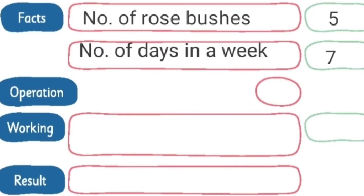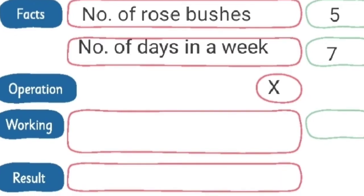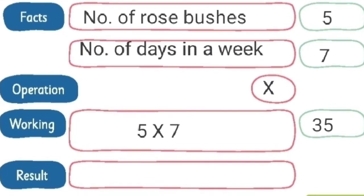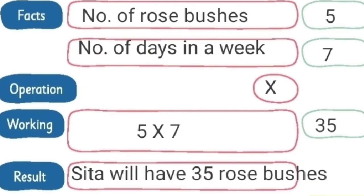Next is operation. We have to do multiplication. The operation is multiplication. Then next we will do the working. That is, five into seven. What is five into seven? Five sevens are thirty-five. Write thirty-five. Then next we will write the result: Sita will have thirty-five rose bushes.